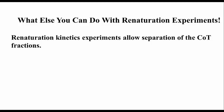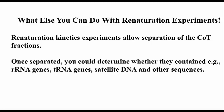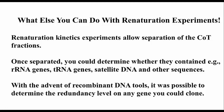These kinetic experiments actually allow you to separate the COT fractions — the high COT, meaning the unique material; the middle COT; and the low COT fractions off the different regions of our graph. Once you separate them, you can do experiments that allow you to determine whether a given COT fraction contains ribosomal RNA genes, tRNA genes, satellite DNA, and other sequences. Later, with the advent of recombinant DNA technology, it became possible to determine the redundancy level of any gene that you could clone.